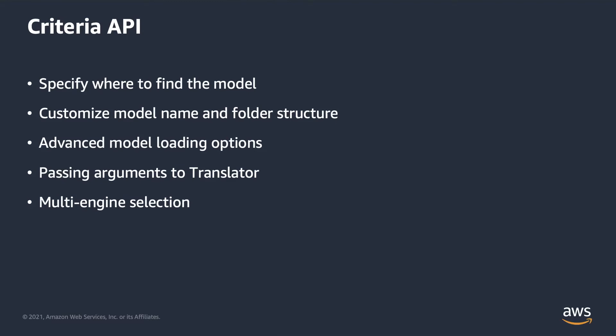Assuming you already know the basic usage of DJL's criteria API, this video will cover advanced usage: how to specify where to find the model location, customize model name and folder structure, advanced model loading options, parsing arguments to the translator, and multiple engine selection.